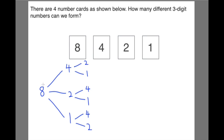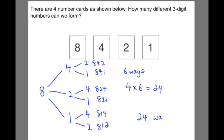So for the 8, how many numbers, how many 3 digit numbers can be formed starting with 8? There are actually 6. If you want to list down, it's actually 8, 4, 2. 8, 4, 1. 8, 2, 4. 8, 2, 1. 8, 1, 4. And 8, 1, 2. So for the first card, we know that there are 6 ways. All together, there are 4 cards. So 4 times 6 will give me 24. So the answer for this question will be 24 ways.